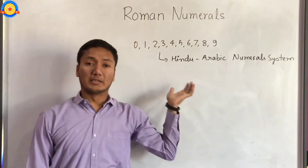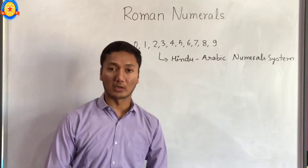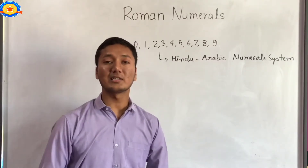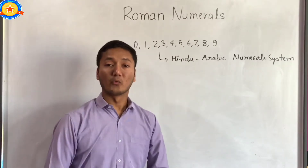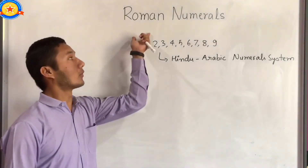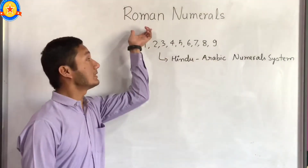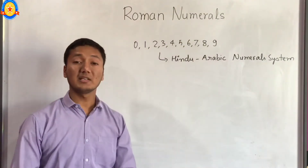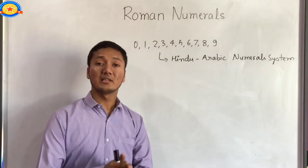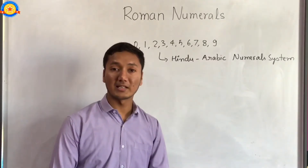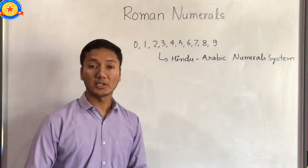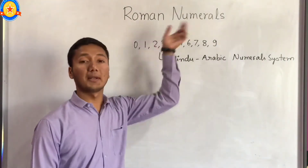But this is not the only system present in the world. One of the earliest systems of numeration is still present in common use, which was developed by the Romans, and that is called Roman numerals. This Roman numeral system is still present in lots of areas such as books, magazines, clock faces, denoting rank in a class, etc.